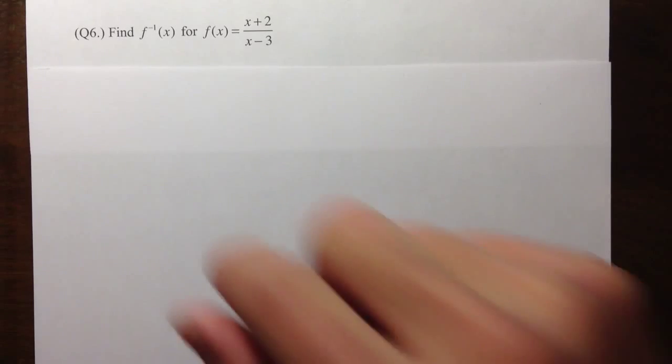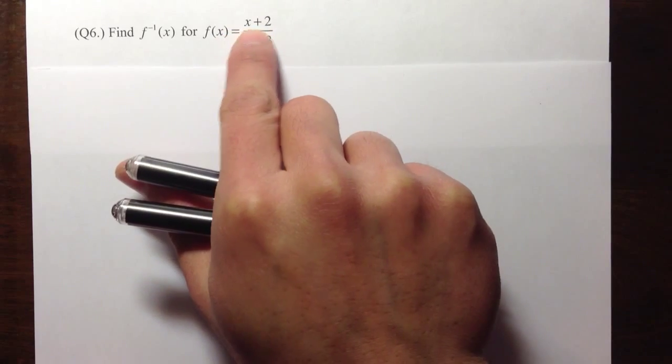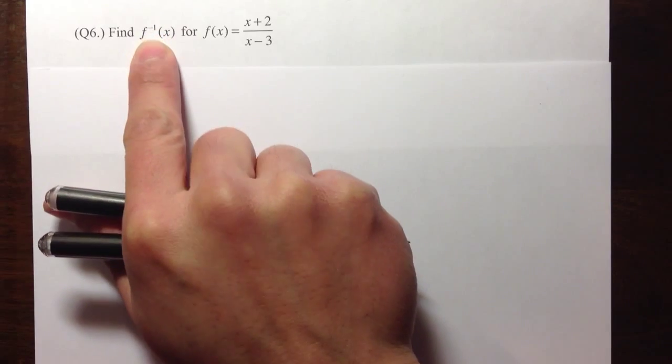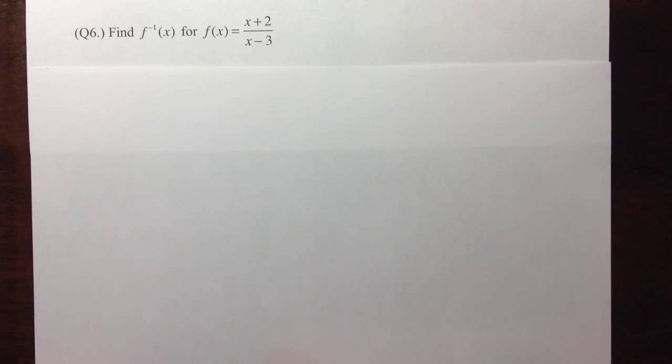For question number 6, we are going to find the inverse function of the function f of x is equal to x plus 2 over x minus 3. And this negative one right here denotes the inverse. This does not mean you just take 1 over whatever that we have here.